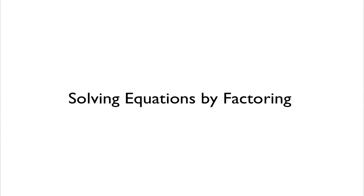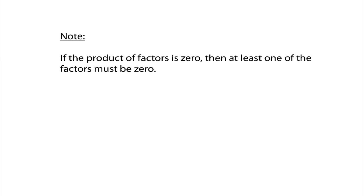In this video I want to talk about solving equations by factoring. In order to do that we need to make note of the following: if the product of factors is zero — in other words if you have a whole bunch of things multiplied together and that product is equal to zero — then at least one of those factors must be zero.